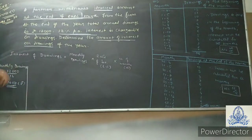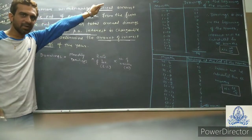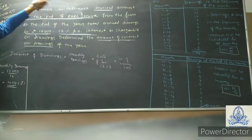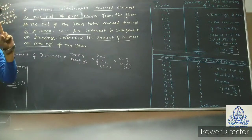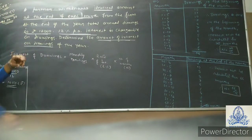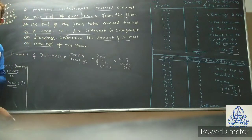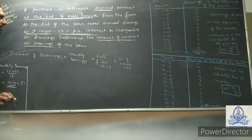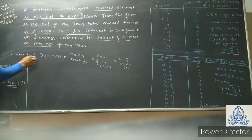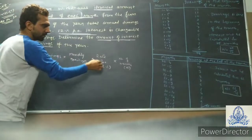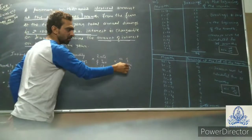In this question, it is given that a partner withdraws an identical amount — that means the same amount — at the end of each month. There are two types of questions that can be asked in the examination: at the end of each month and at the beginning of each month. The formula used is: interest on drawings = monthly drawings × rate of interest × number of months / 12.